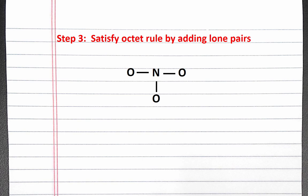Our next step is to satisfy the octet rule by adding lone pairs. We start by satisfying the octet rule for our peripheral atoms, which are the three oxygen atoms. Each oxygen atom wants six more electrons. Adding these lone pairs, we've used up all of the remaining 18 electrons. Notice that nitrogen, our central atom, is not yet satisfied.